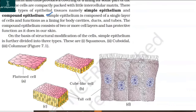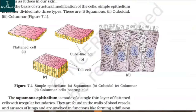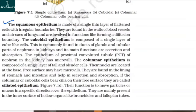On the basis of structural modification of the cells, simple epithelium is further divided into three types: squamous, cuboidal, and columnar. The squamous epithelium is made of a single thin layer of flattened cells with irregular boundaries. They are found in the walls of blood vessels and air sacs of lungs and are involved in functions like forming a diffusion boundary.